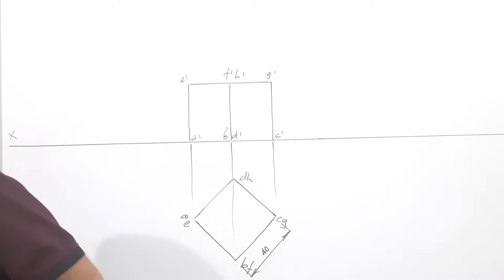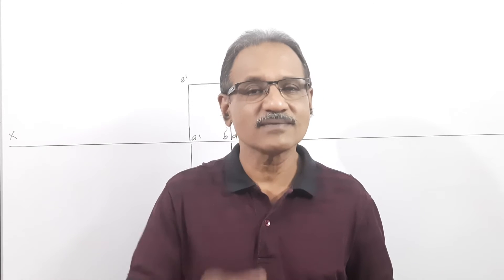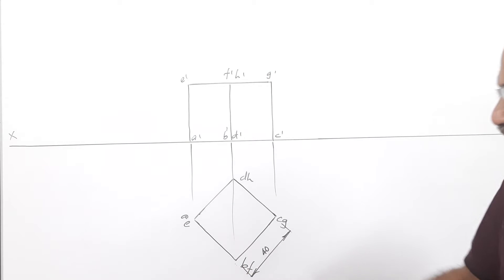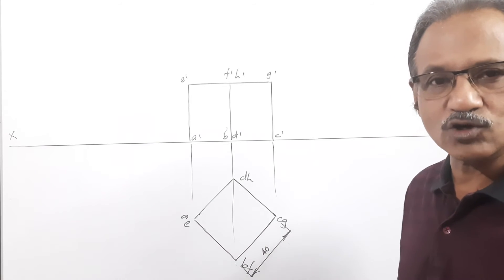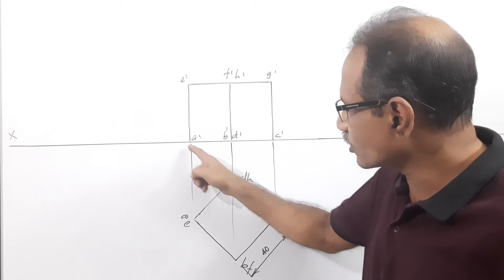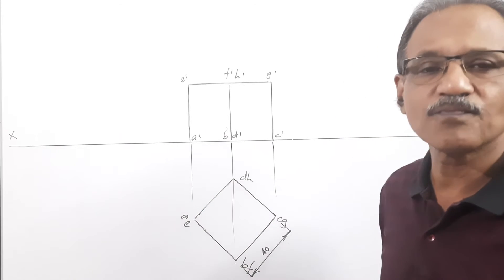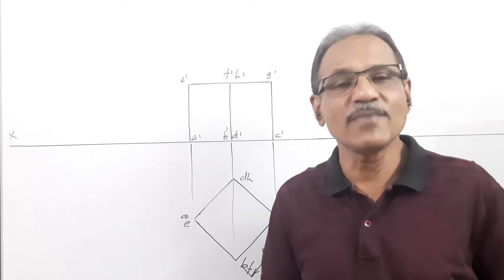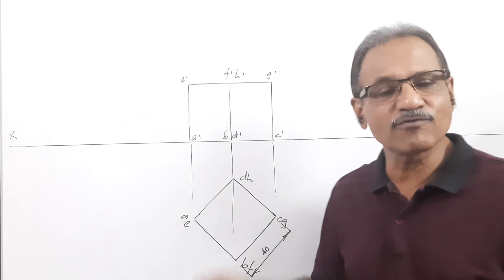That's a cube. So a cube here is resting on the ground on a corner with the solid diagonal vertical. In the simple position, all four lateral square faces make 45 degrees to VP. If you extend each face — 45 degrees, 45 degrees, 45 degrees. All four lateral faces make 45 degrees to VP, or you can say all four base edges make 45 degrees to VP.